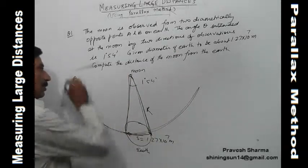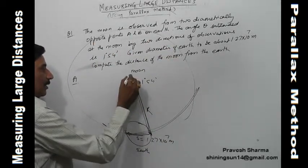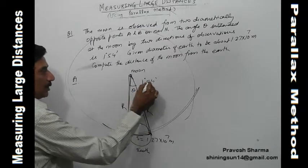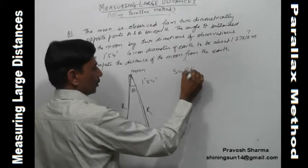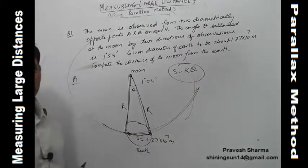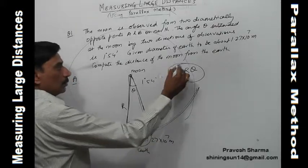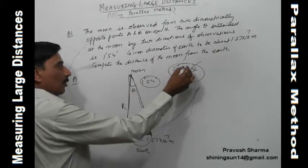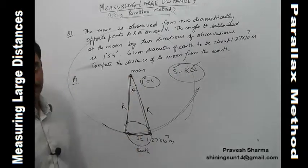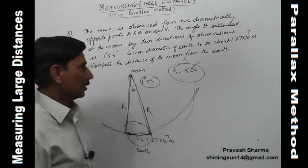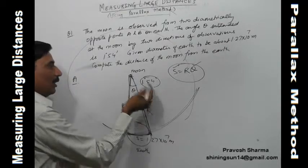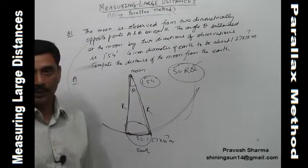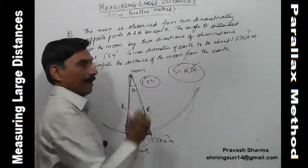In this example, the Moon is observed from two diametrically opposite points on Earth. This angle — also called the parallactic angle — is 1 degree 54 minutes. The diameter of Earth is given as 1.27 × 10⁷ meters. We are supposed to find the distance between Earth and Moon using s = rθ, but θ must be in radians.